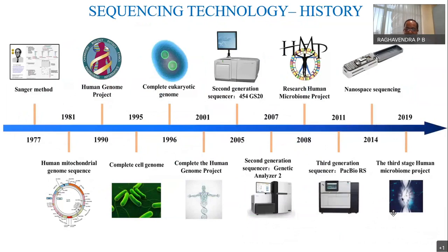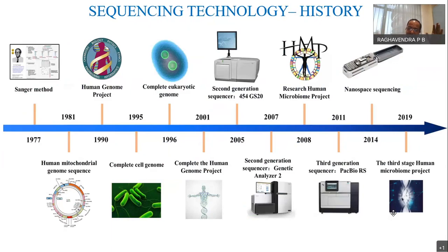The evolution of sequencing technology started with the Sanger method, then people started looking at mitochondrial sequencing, then complete genome sequencing. The human genome project followed, then the second generation of sequencers came, then microbiome projects and third-generation platforms like PacBio. Now nanopore sequencing is prominent, and next-generation sequencing allows complete human genome sequencing to be studied. This overview shows how the costs and technologies have evolved, with costs becoming lesser as technology grows and applications increase.